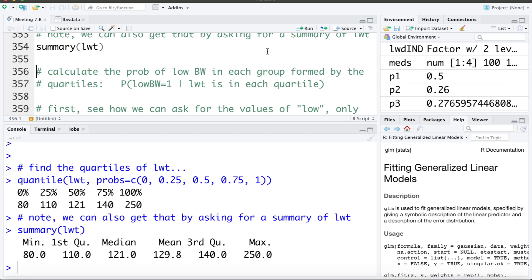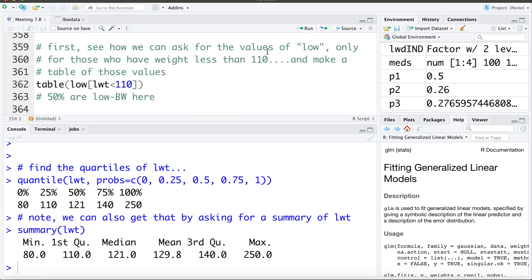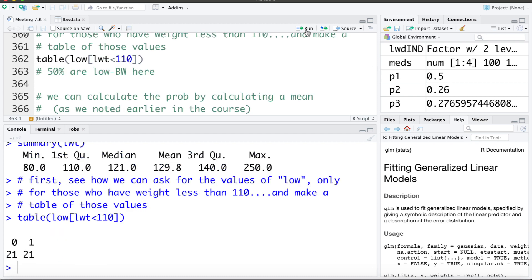So for each of those groups we're going to calculate what's the probability of low birth weight given you're in each of those groups, or in other words what proportion of individuals in each of those groups were low birth weight. So first just a reminder of how we can do this. Here I'm going to ask R for the low variable, give me only those whose weight is less than 110. So in other words I'm finding those in the first quartile and give me a table of those. We can see here within the first group 21 were low birth weight, 21 were not, or 50 percent.